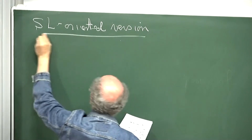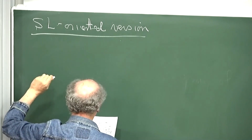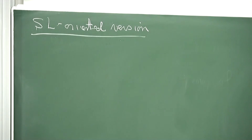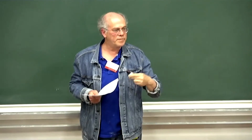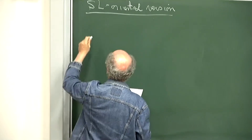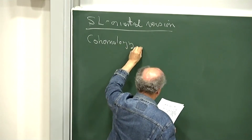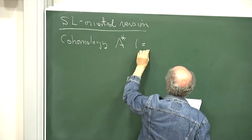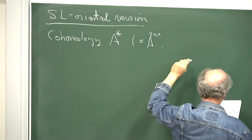It's the same story, but SL-oriented means that you have Thom classes and a Thom isomorphism for bundles endowed with an isomorphism of the determinant of the bundle with the trivial bundle — or, if you like, a reduction of the structure group from GL_n to SL_n. You have the same story of cohomology A-upper-star, but the basic example is the Chow-Witt groups that Niels Feld talked about.